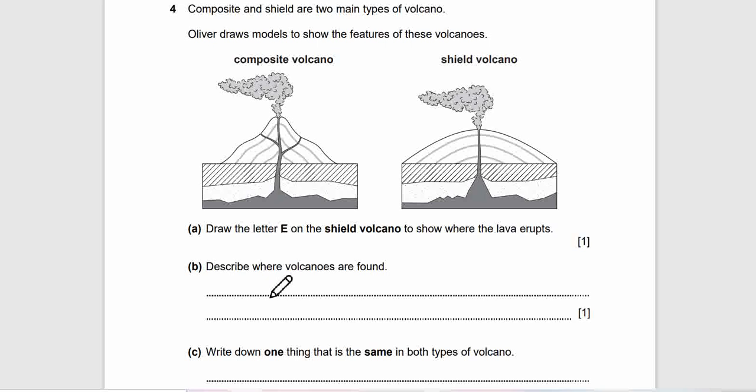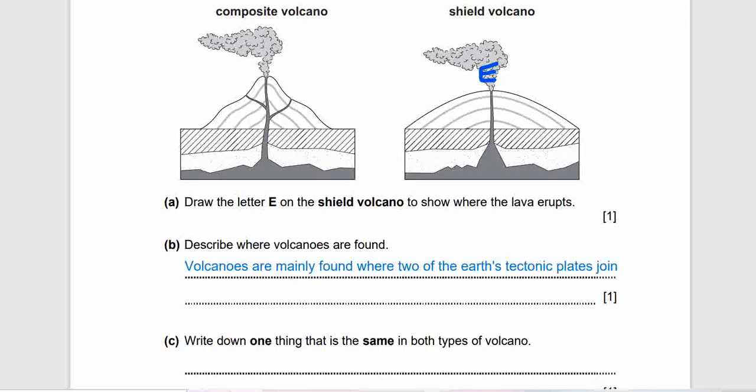Now we are in question 4C. Write down one thing that is the same in both types of volcanoes. You got your answer guys? Let's check it out. So both types of volcanoes, they are releasing gases. As you see from here, gases and smokes.